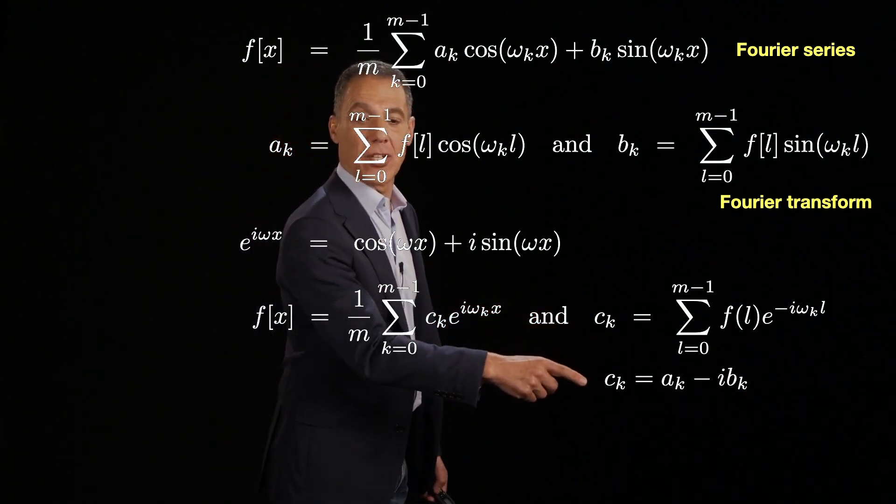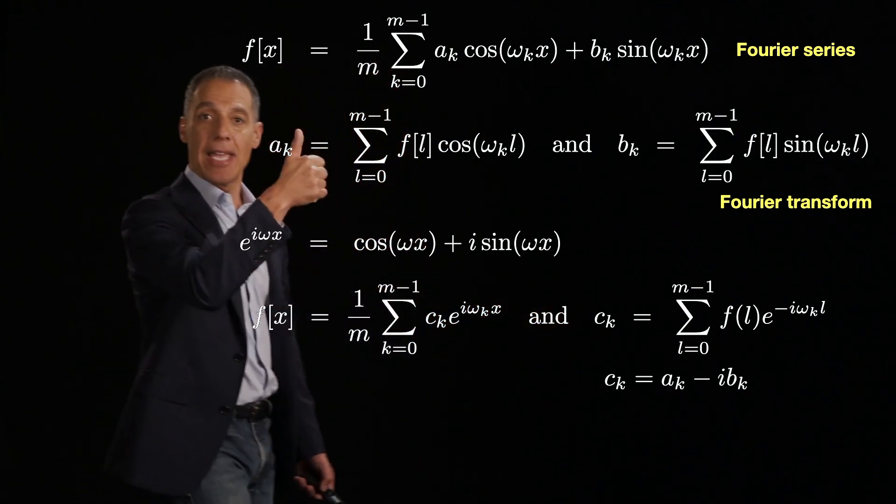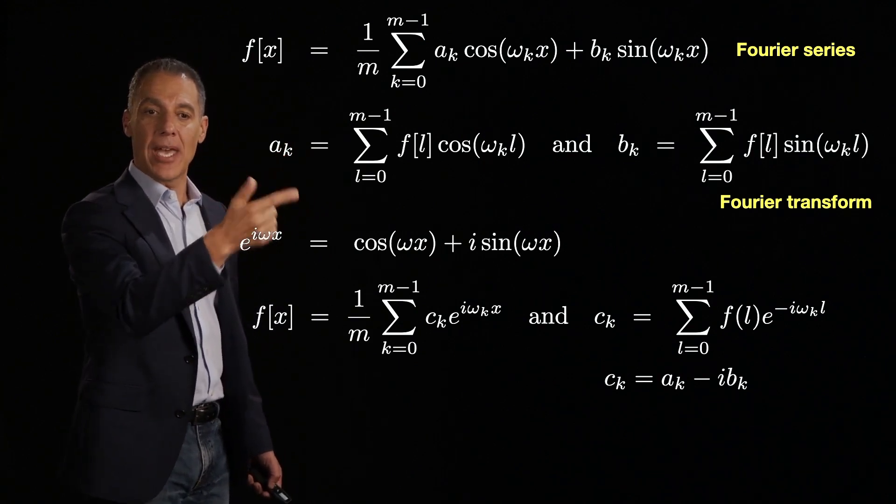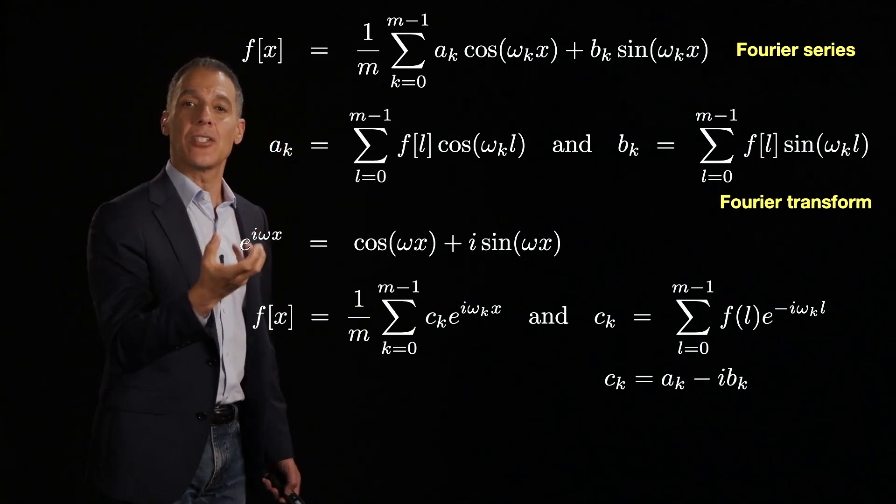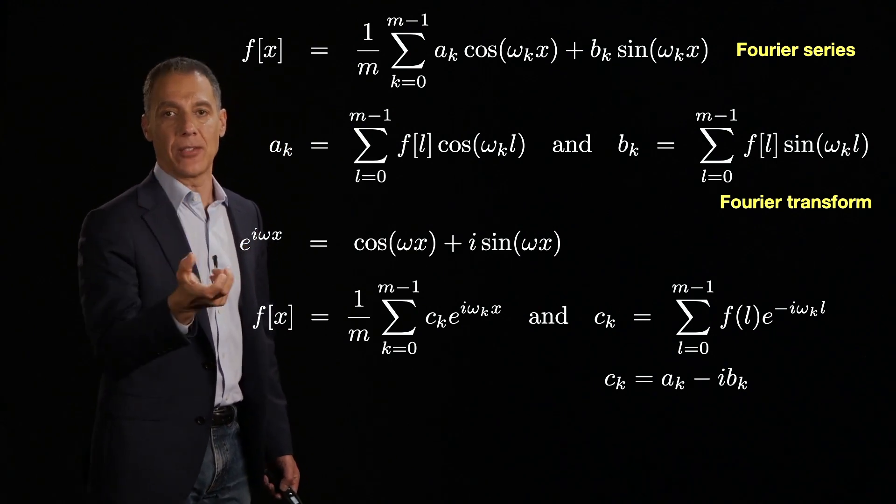And I'm not going to derive all of this because it's quite cumbersome notationally. And it turns out when you do this derivation, however, that c_k just combines the a_k and the b_k, which are what? The cosine and the sine terms.